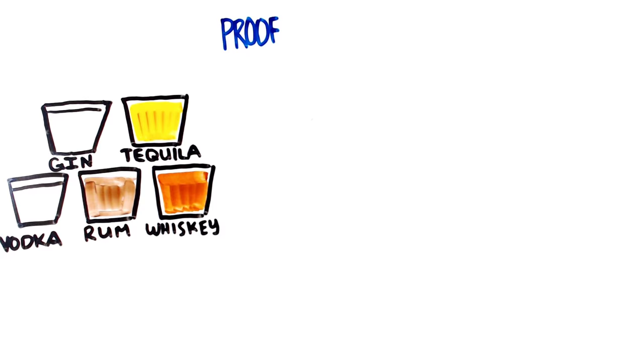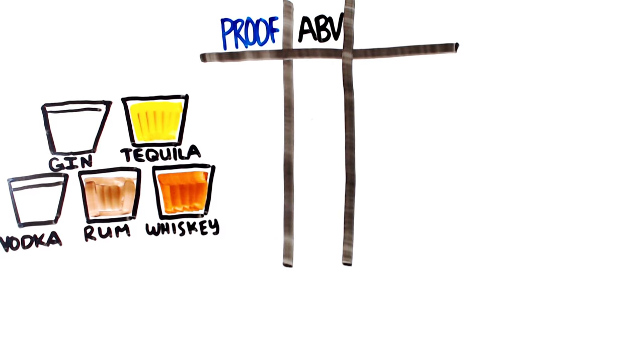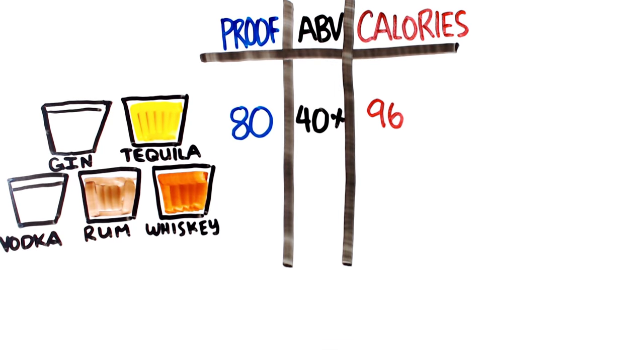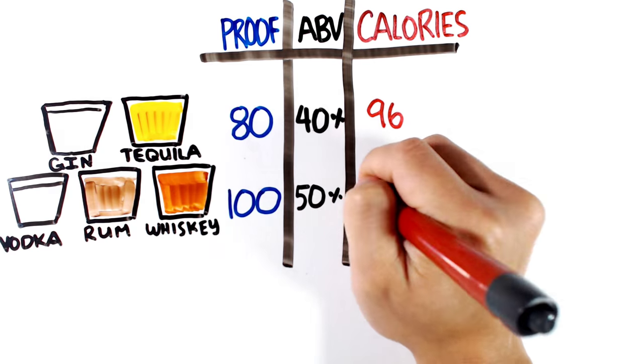The only factor is the proof, or alcohol content divided in half, in the hard liquor. The most typical hard liquor is 80 proof, or 40% alcohol by volume, and contains 96 calories per shot or jigger. A 100 proof, 50% alcohol by volume, increases the calorie total to 123.